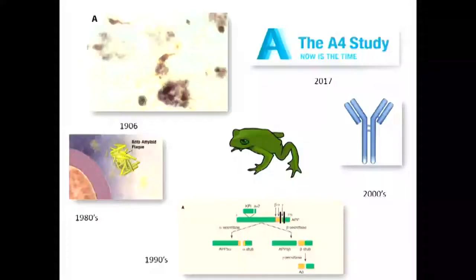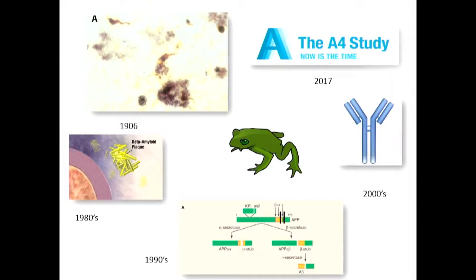Why did I end up studying Alzheimer's disease after being trained as an oncologist? Since I finished my fellowship there have been over 200 drugs approved for various cancers, and we don't yet have even one disease-modifying drug for Alzheimer's disease. As a big-picture person looking at the history of Alzheimer's, when I read an article about the 100-year anniversary of the first description of Alzheimer's disease, I started to see the problem in the field and wanted to try to do something to change it.